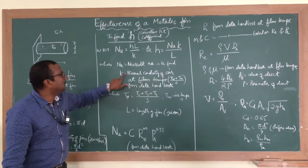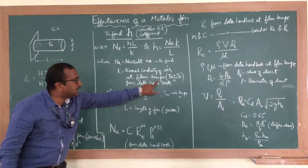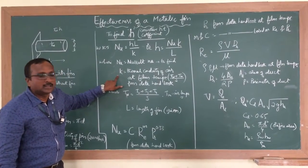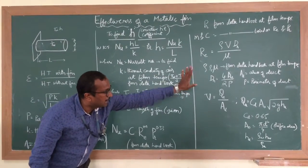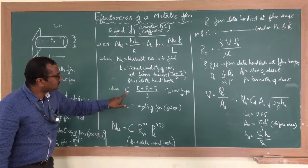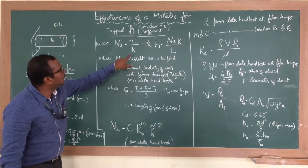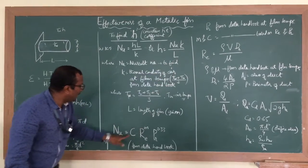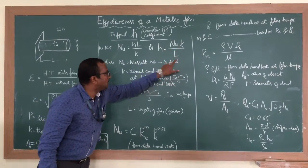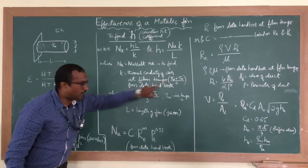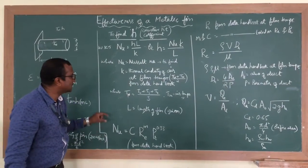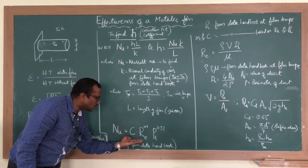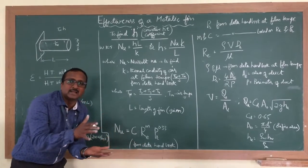Once you know the film temperature, you can find the K value of air from the data handbook at that temperature, using the properties of air table. At the same time, you also take the Prandtl number PR value from there. Once you find K and Nu, you can find H. L is the length of the fin. To find Nu, you have another correlation — the Nusselt number correlation for convective heat transfer over a cylindrical surface, available in the data handbook.